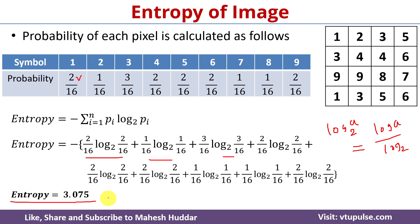Once solved, the entropy is equal to 3.075. This is the simplest process we can follow to calculate the entropy of a given image. I hope the concept is clear — if you like the video, please like and share with your friends, press the subscribe button for more videos, and press the bell icon for regular updates. Thank you for watching.